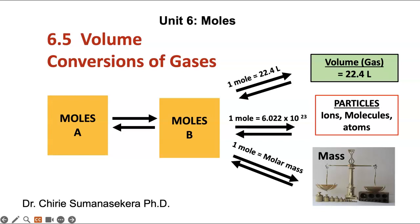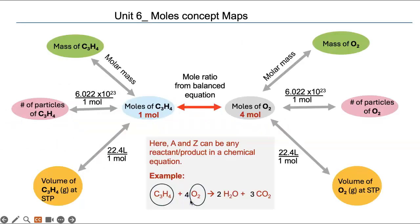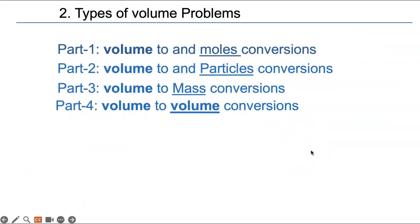Here is where we are in the scale of topics and concept map. We can convert volume of a given substance in a balanced equation to its moles, and then to the moles of the other thing, or the mass, number of particles, or volume using these three factors. We will look at four types of problems: volume to moles, volume to particles, volume to mass, and volume to volume — where you use the same factor twice but flipped on the two ends.